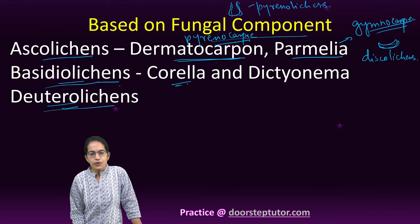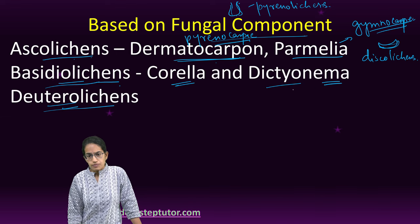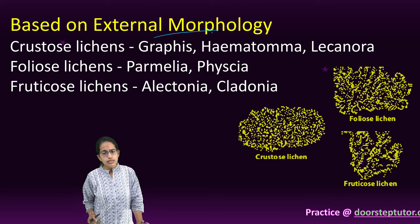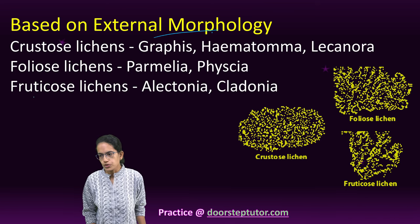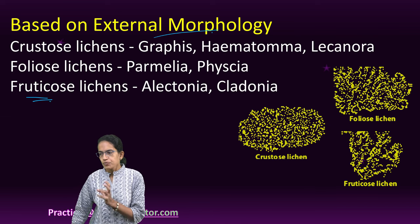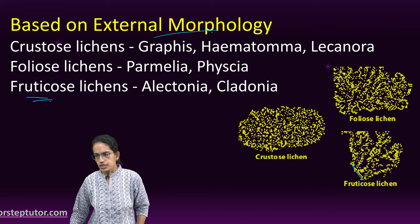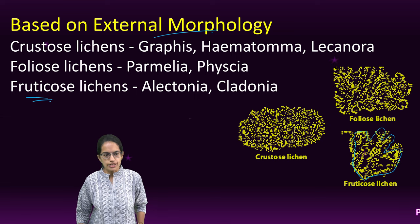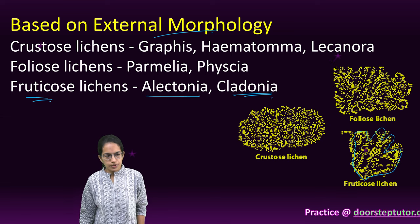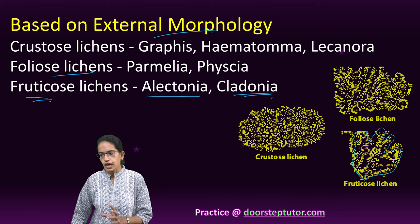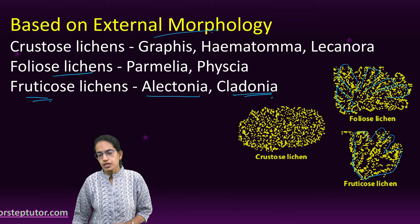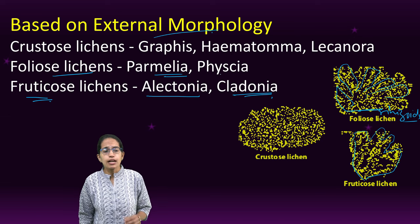Good examples of basidiolichens are Chorella and Dictyonema. Coming to external morphology, there are three types of lichens: Crustose, Foliose, and Fruticose. Fruticose is shrub-like — it grows erect and hangs from a substratum, and there are basal mucilages attached to it. Usnea and Cladonia are good examples. Foliose lichens are flat, leaf-like structures attached to the substratum by the help of rhizoids. Good examples are Parmelia and Physcia.